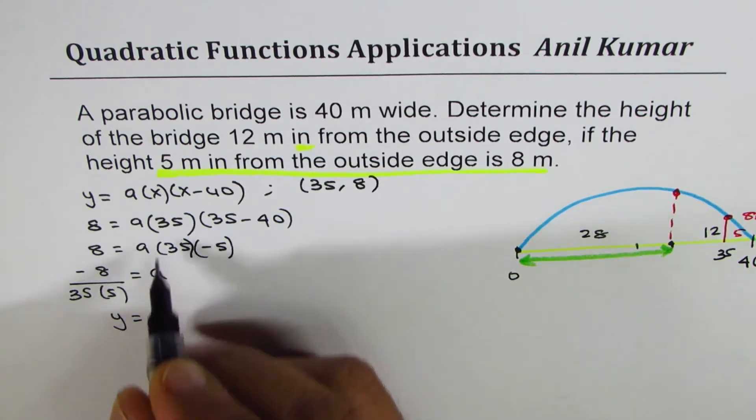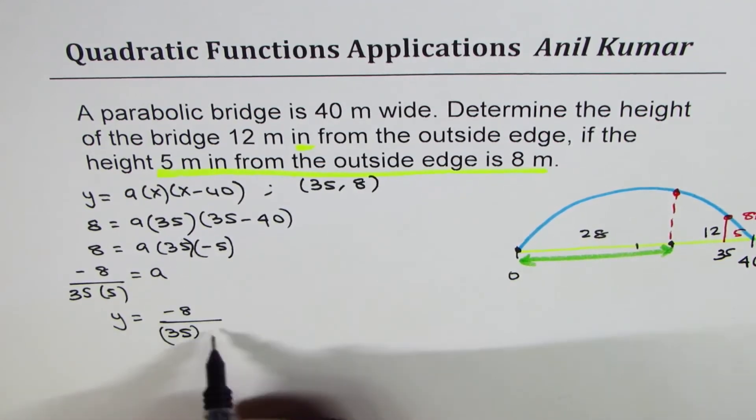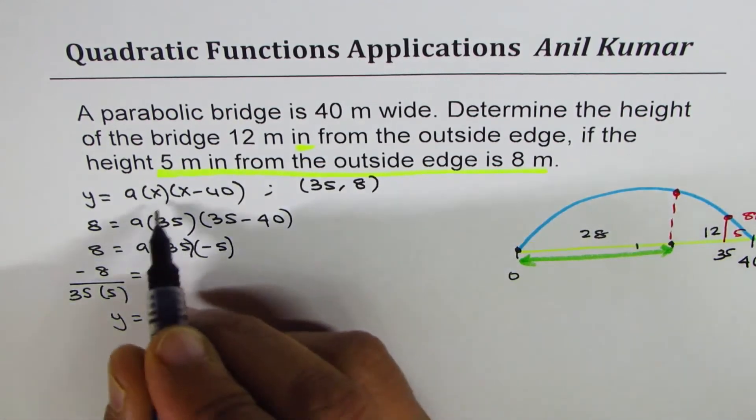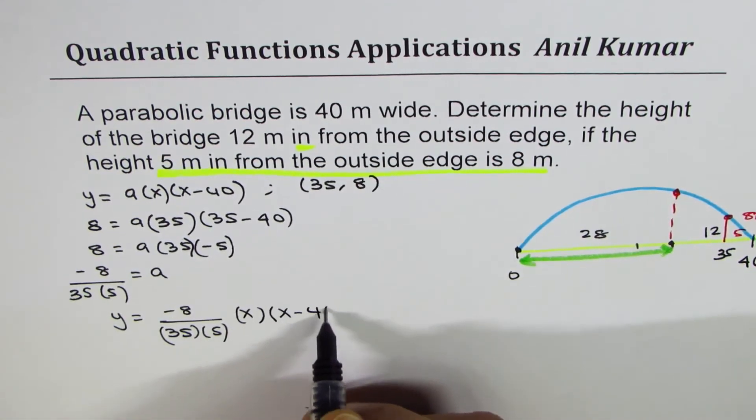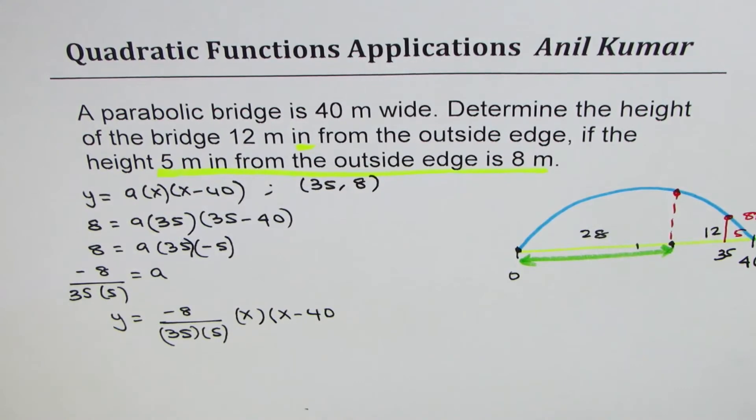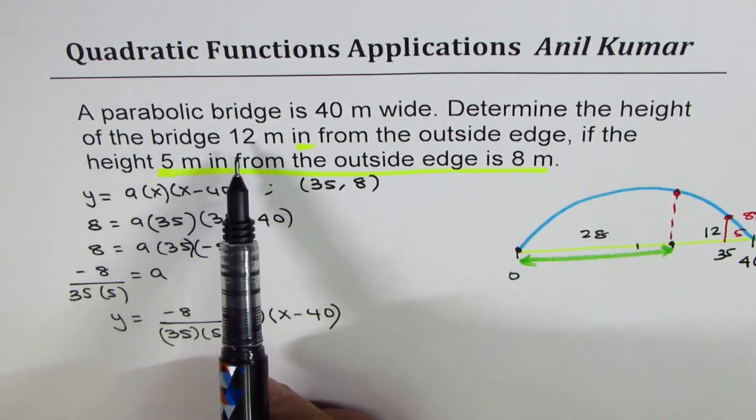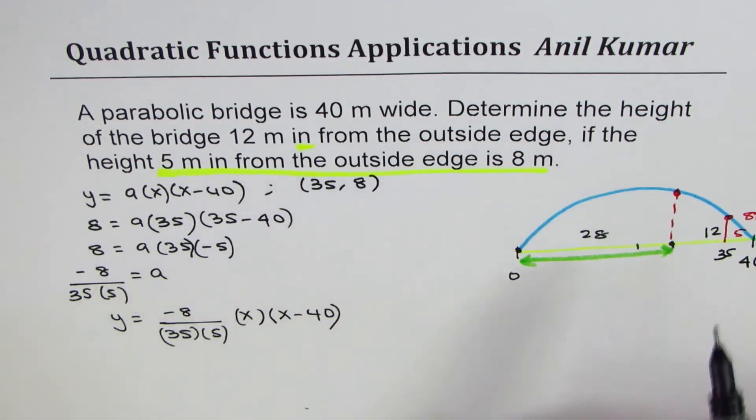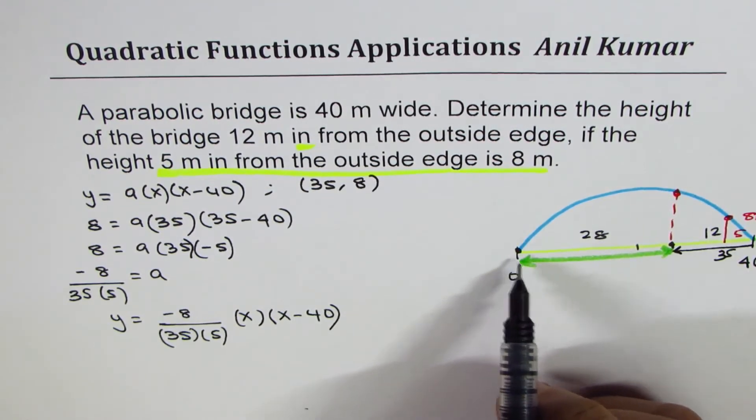Once we know the value of a, we can write y is equal to minus 8 over 35 times 5, and we have x times x minus 40. So that becomes the equation for us. Once we know the equation, it's very easy to find the height of the bridge 12 meters in from outside.